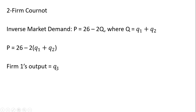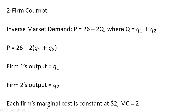Firm 1's output is given by Q₁ and firm 2's output is given by Q₂. We're going to assume that each firm has a constant marginal cost equal to $2, so MC equals 2. If the firms had different marginal cost structures, we would still follow the same pattern in finding the equilibrium output and price in this market.